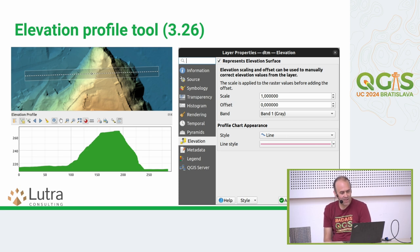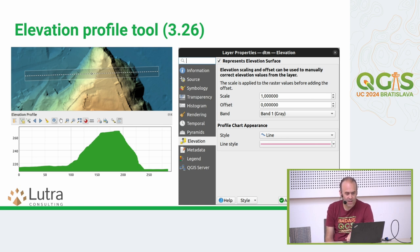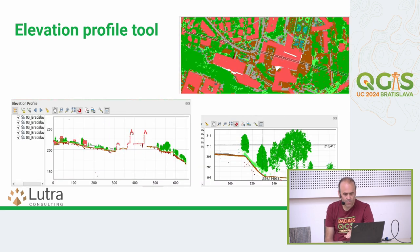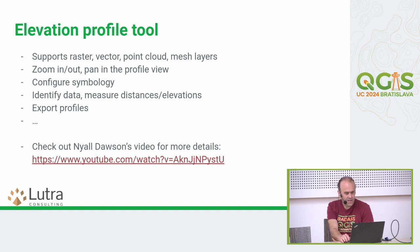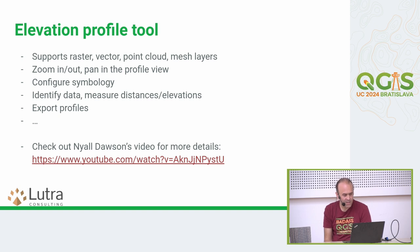In 3.26, the elevation profile tool was introduced in collaboration with Northroad. You can generate profiles for any 3D data — like DEMs for rasters, vector layers, and point cloud layers — to create cross-section views. It also supports mesh layers. You can zoom in, zoom out, change the symbology, measure on the profile, and profiles can also be included in print layouts.